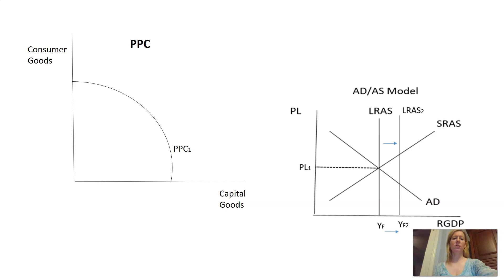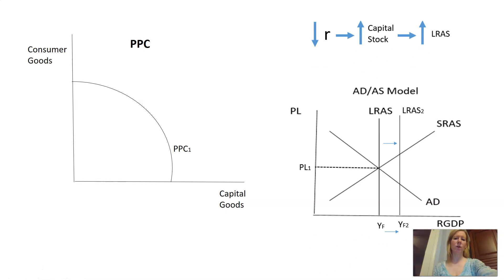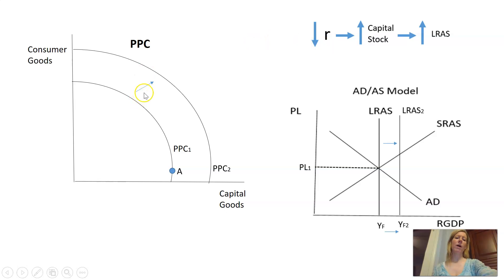Another model that can be used is the PPC — the production possibilities curve or production possibilities frontier. This represents the maximum amount you can produce with the given resources. Here we have capital goods and consumer goods. If the economy focuses on the production of capital goods due to a decrease in the real interest rate, at point A on the PPC graph, in the long run this causes an outward shift of the PPC. A rightward shift of the LRAs is demonstrated by an outward shift of the PPC, since capital is used to produce both capital and consumer goods, so you will have more of both.